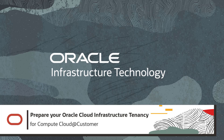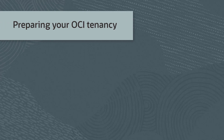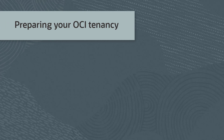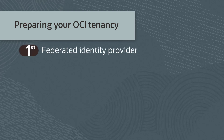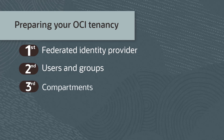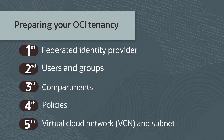In this video I'll show you how to configure your Oracle Cloud Infrastructure tenancy in preparation for installing Compute Cloud at Customer. Preparing your OCI tenancy includes setting up these items: Federated Identity Provider, Users and Groups, Compartments, Policies, and Virtual Cloud Network or VCN with a subnet.